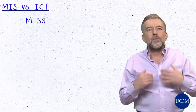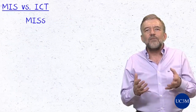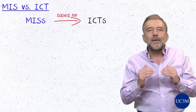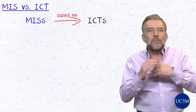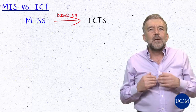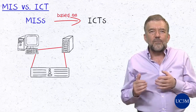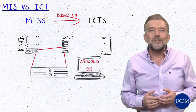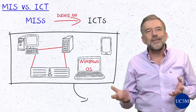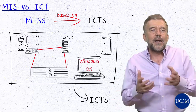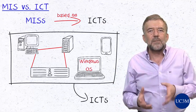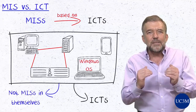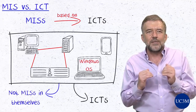We can see from these examples that management information systems are based on ICTs, but they are not merely technology. A computer network, smartphone, or our laptop's Windows operating system are examples of ICTs, and can indeed be used by management information systems, but they are not, in themselves, management information systems.